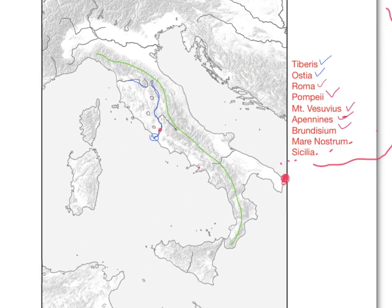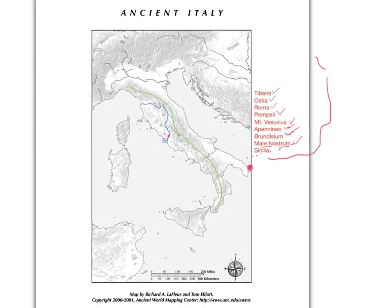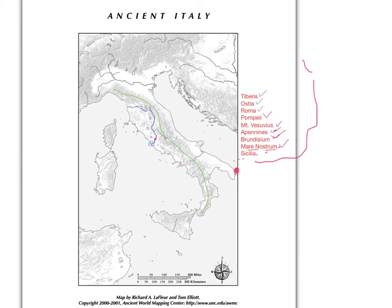The next item on our list is Mare Nostrum, which literally means 'our ocean' or 'our sea.' That's what the Romans called this body of water here, which of course is the Mediterranean Sea. They liked it so much and thought they owned it, so they actually named it 'our sea' — which would be a problem for anybody else who happened to live there. Mare Nostrum is the ancient name the Romans used for the Mediterranean.